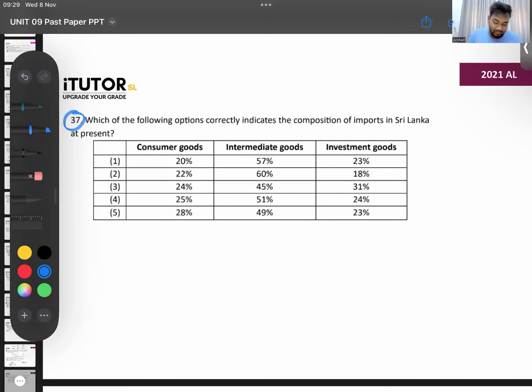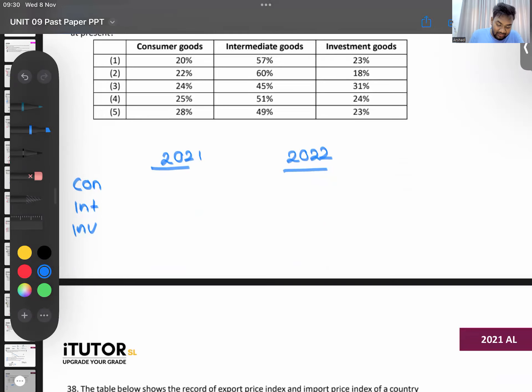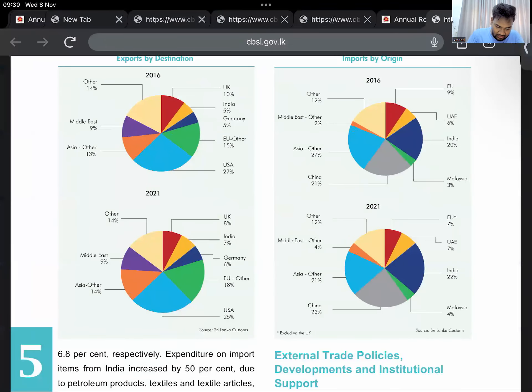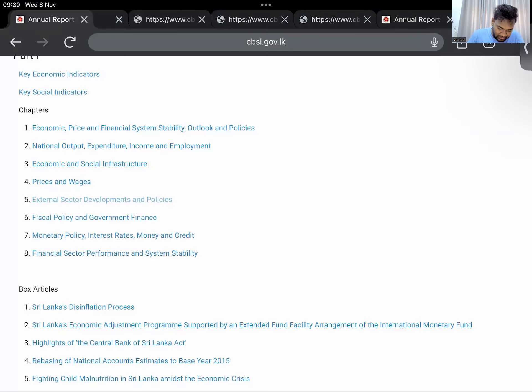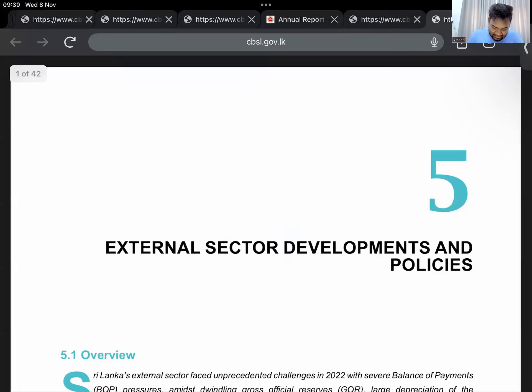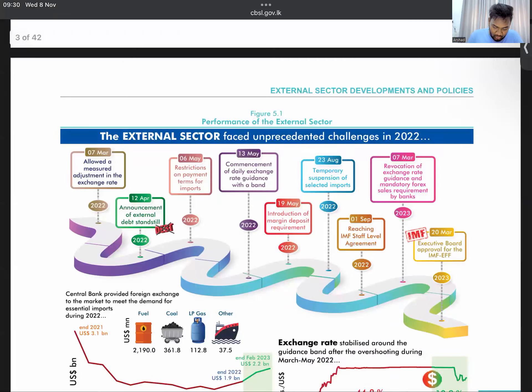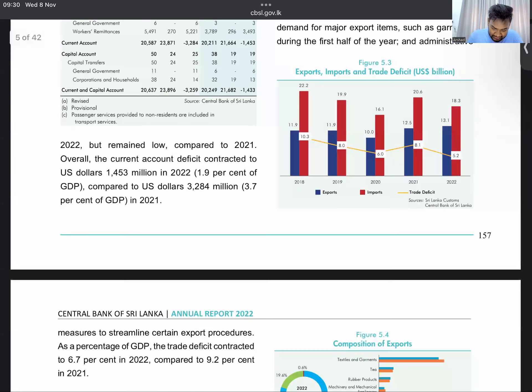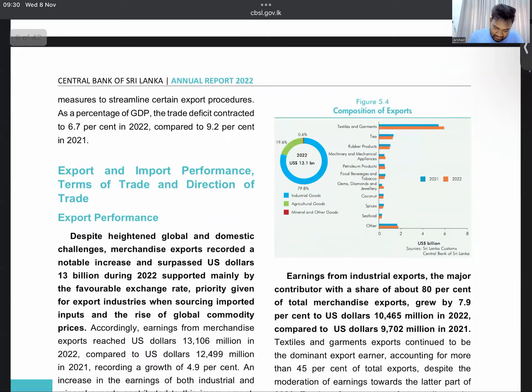There was a similar question in our mock exam. Which of the following correctly indicates the composition of imports in Sri Lanka at present? We'll learn 2021, what's the composition? 2022, what's the composition? Imports are mainly divided into consumer goods, intermediate goods, and investment goods. Let's go and see 21 and 22. This is the 2022 CBSL report composition of imports.